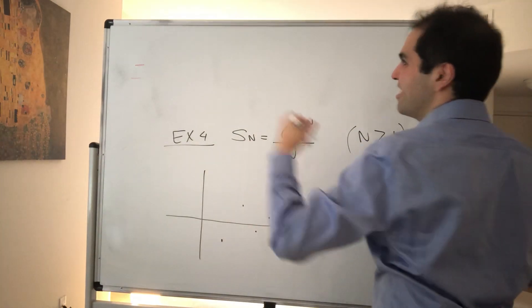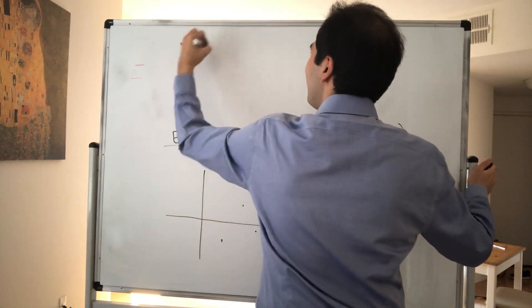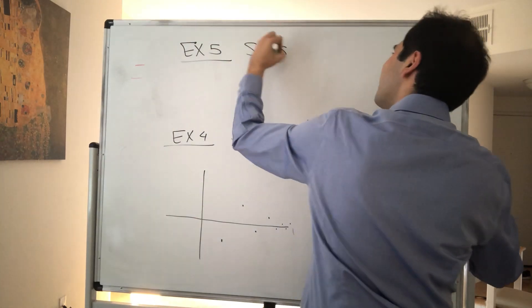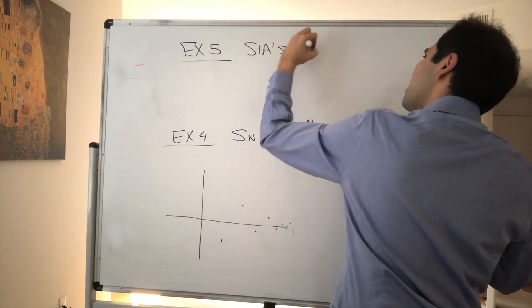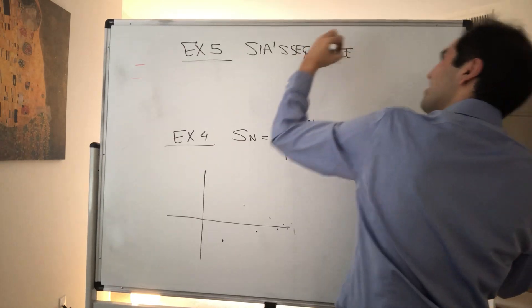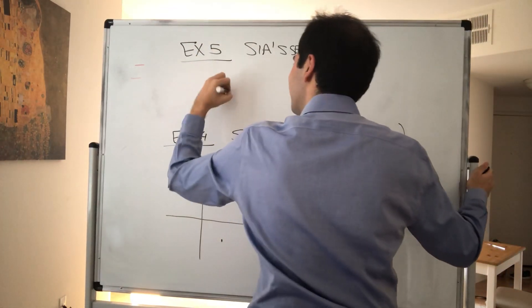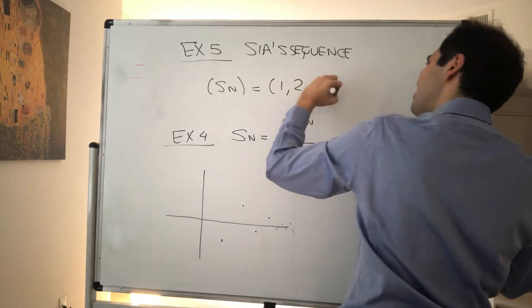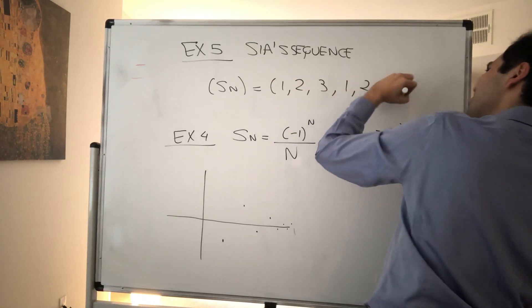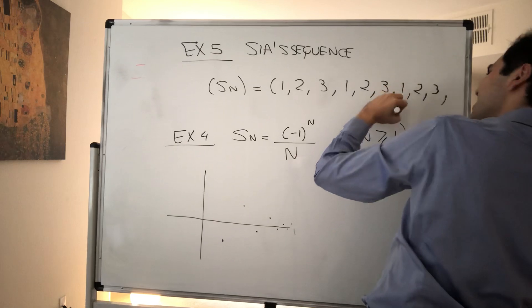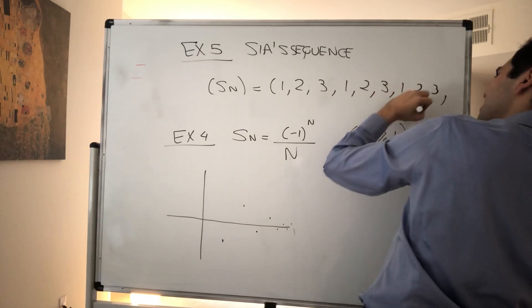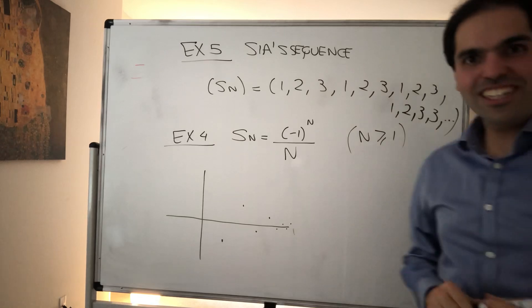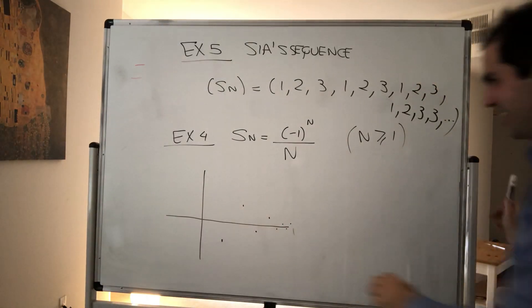Last but not least, I want to mention my favorite sequence, called the SIA sequence. It goes 1, 2, 3, 1, 2, 3, 1, 2, 3 — essentially the chandelier song.